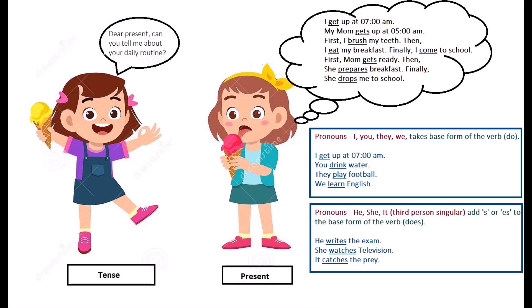All these sentences tell us about a routine. Something that happens regularly or always. So, the verbs in these sentences are said to be in the present tense. Now, children, you can see few verbs are having S along with it. See, the first sentence I get up at 7 am. There, it's get. What about the second sentence? My mom gets up at 5 am. But S is there with get. Why we are using this S along with get?